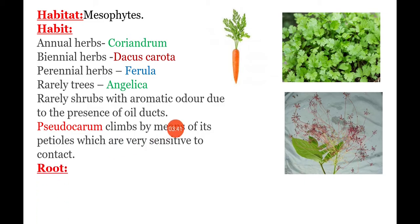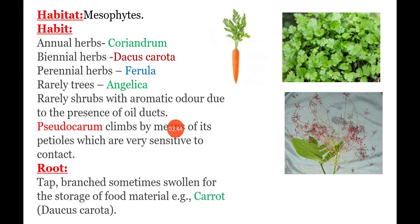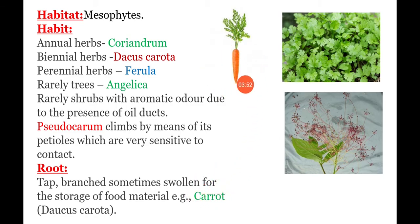Next, Root system. Roots are generally tap roots, and they are branched. Sometimes they are swollen because they store food materials — for example, Dacus carota. Dacus carota stores food material, so the root becomes bulged or swollen in size.